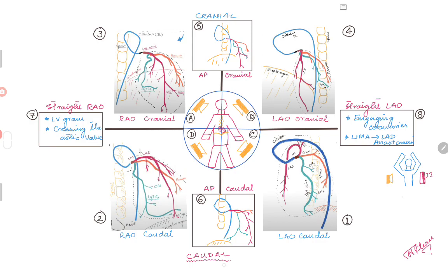Looking at picture one here at four o'clock, we are identifying the view by looking at the catheter. The catheter is coming below the diaphragm, so probably femoral access, and the catheter is open in an L-shape, so it's probably an LAO view. Since you don't see the diaphragm in the middle of the image, it's probably a caudal view — so LAO caudal view, exactly the view shown in this picture.